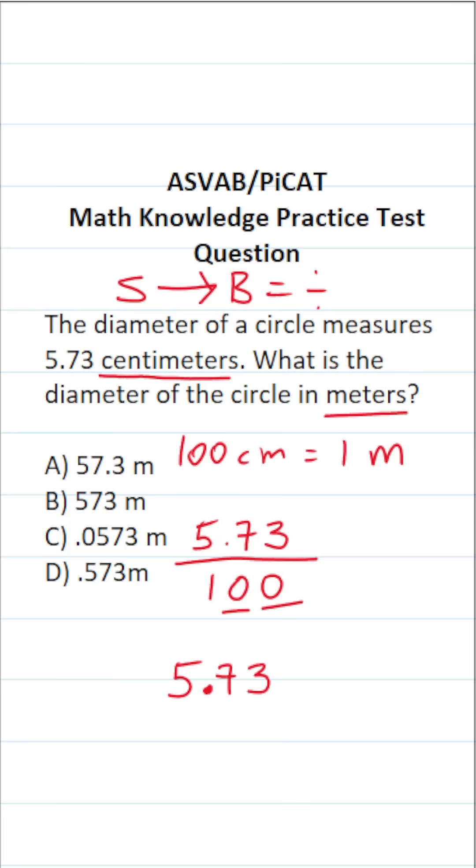In this case, we're dividing by two zeros. So we're going to take this decimal and shift it one, two times to the left, and add a zero placeholder. So in other words, 5.73 centimeters is the same thing as 0.0573 meters. So this one is going to be C.